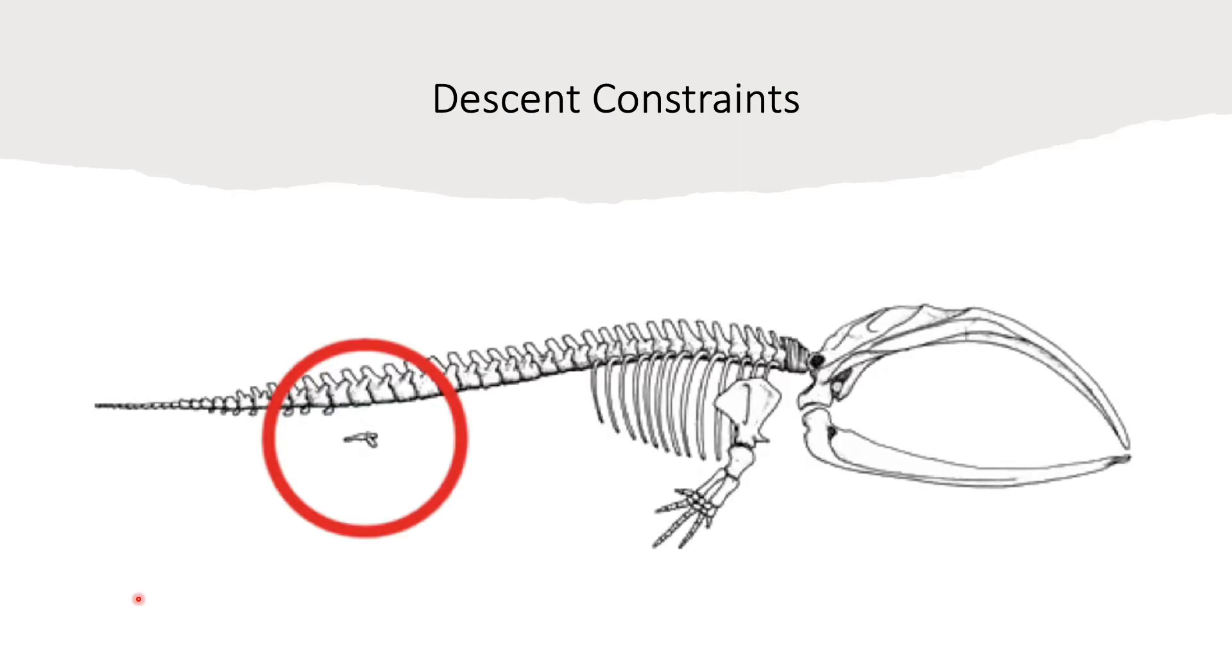Lastly, we're going to talk about the constraints of descent and ancestry and why that also explains the imperfectness of evolutionary design. Animals are constrained to the animals that they've evolved from. An example here is the whale. This is an image of a whale skeleton. It uses fins we know that, but it also has a pelvic girdle here circled in red. This has evolved from animals on land with legs.